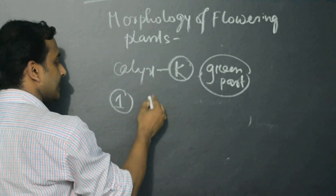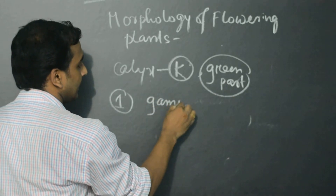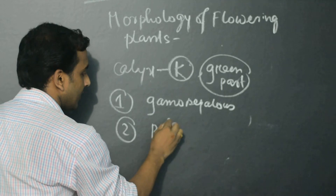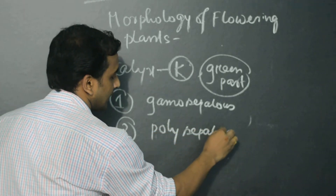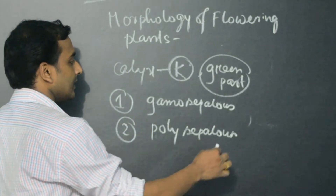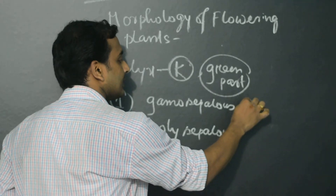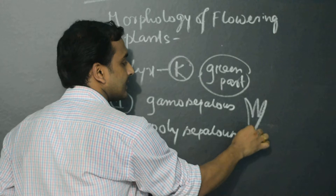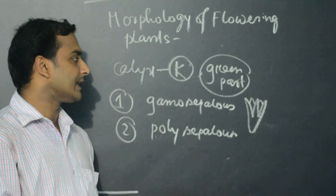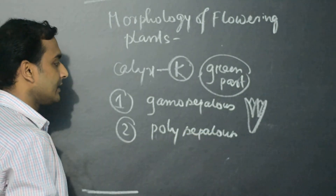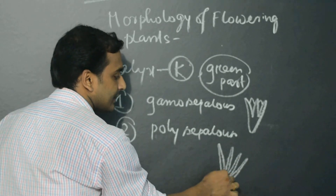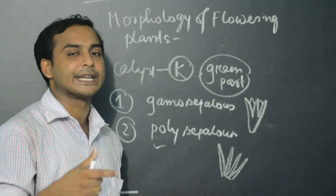Calyx is of two types: it may be Gamosepalous or Polysepalous. Gamo means when the sepals are united. When sepals are united, that is called Gamo. When sepals are free from the base, that is called Poly. So Poly means free, and Gamo means united.